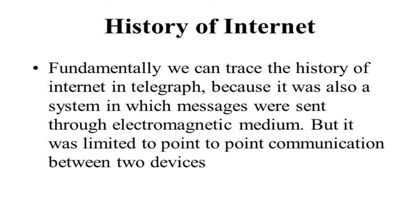This is very easy today, but when you try to trace the history of internet, it basically started with the telegraph, because it was also a system in which messages were sent through electromagnetic medium. It was limited to point-to-point communication between two devices. Fundamentally, internet is also a kind of electromagnetic system, so that's why it started with telegraph. Further, radio came, then TV came, and then the computer came and the internet emerged.